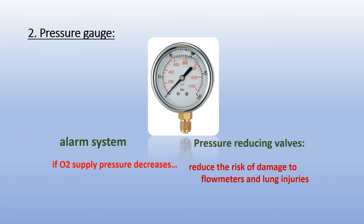The second component is the pressure gauge, which shows the pressure in the pipeline. It also has an alarm system that goes off when the oxygen supply pressure decreases, to alert the workers to take the proper action. It also has pressure reducing valves to reduce the risk of flow meter and lung injuries, because the pressure at the oxygen source is much higher than needed to work the anesthetic machine.